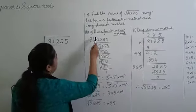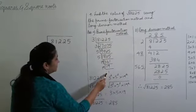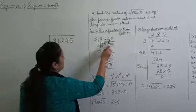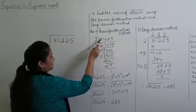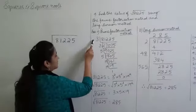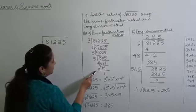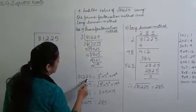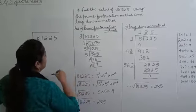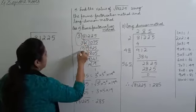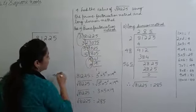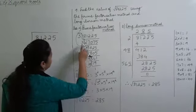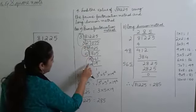To find the square root by the prime factorization method, first write out the number 81,225. Check if this number is divisible by 2 — it is not. So we go with 3, then 5, and then 19. So 81,225 equals 3 squared into 5 squared into 19 squared.